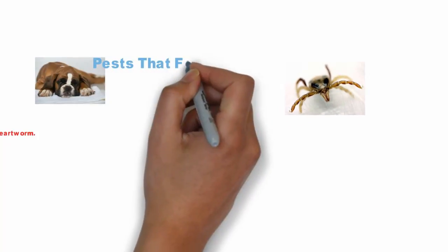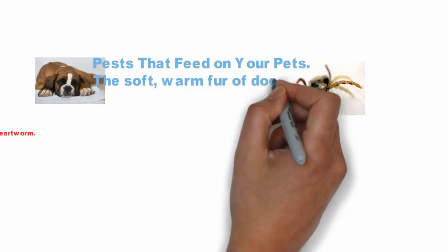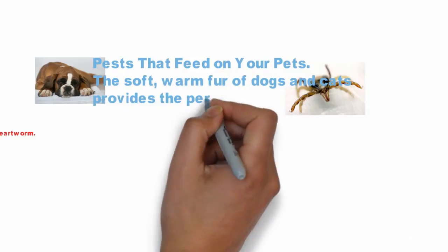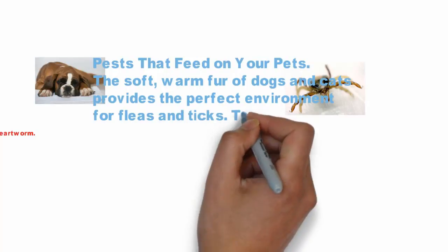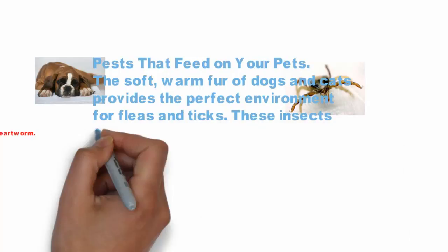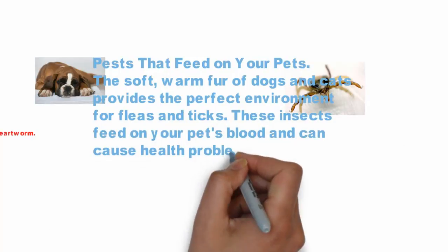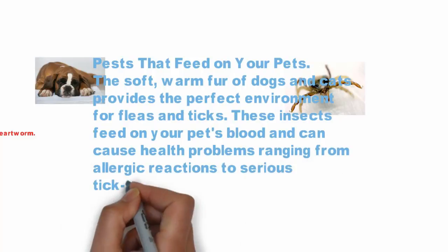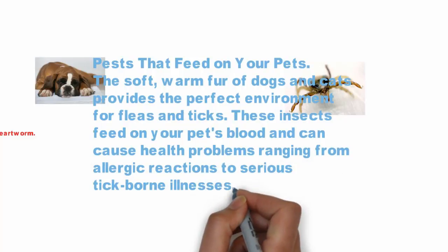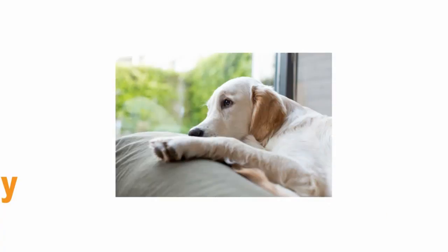5. Fleas and Ticks. The soft, warm fur of dogs and cats provides the perfect environment for fleas and ticks. These insects feed on your pet's blood and can cause health problems ranging from allergic reactions to serious tick-borne illnesses.